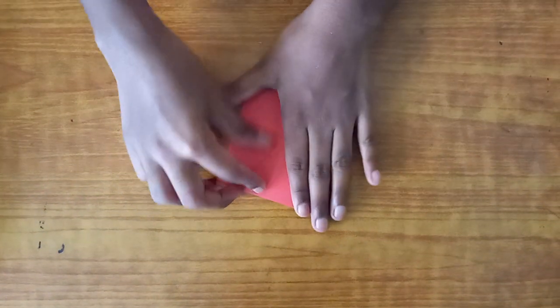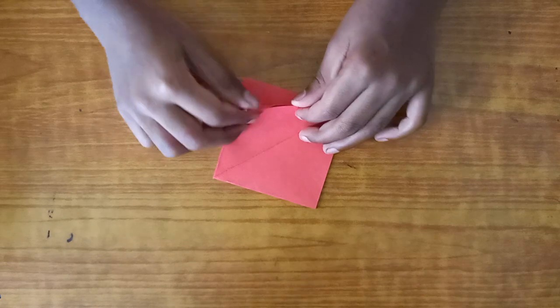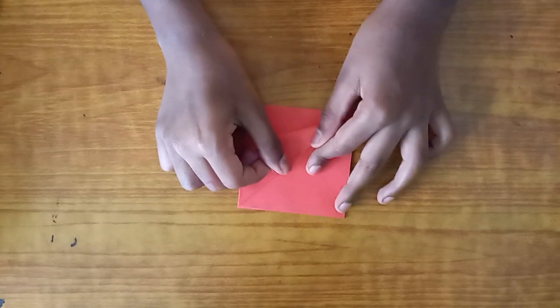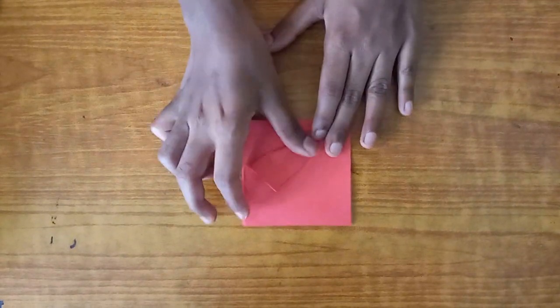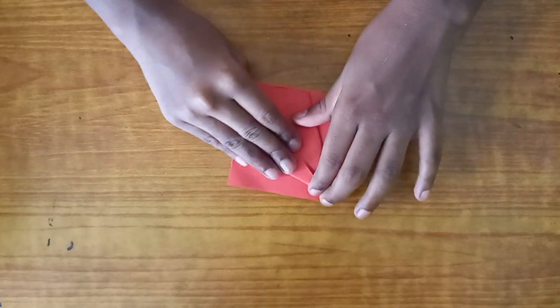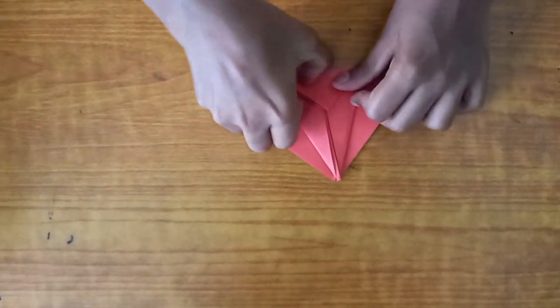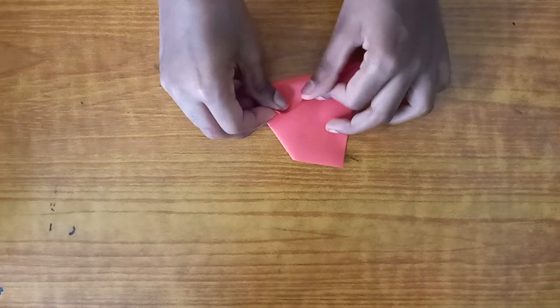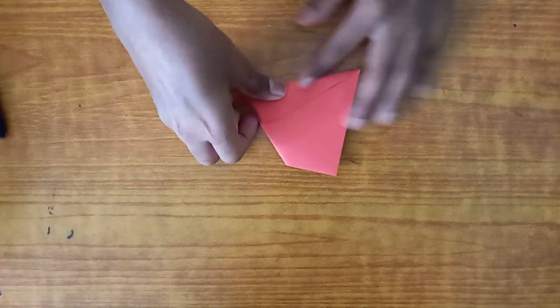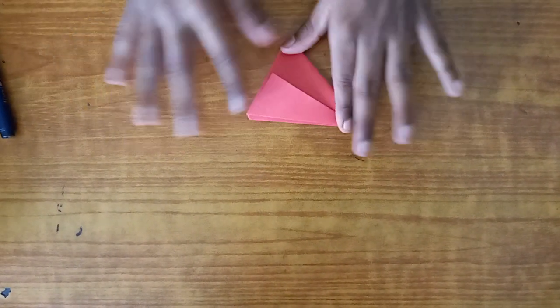Now this is kind of going to be like an origami crane, but it's way more different. Take this flap and fold it to the middle crease, and crease tight. Repeat on this side, and fold this point to the bottom. Flip it and repeat it all over.